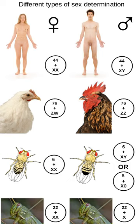The ZW sex determination system is found in birds, some reptiles, and some insects and other organisms. The ZW sex determination system is reversed compared to the XY system: in the chicken, females have two different kinds of chromosomes, and males have two of the same kind. In the chicken, this was found to be dependent on the expression of DMRT1. In birds, the genes FET1 and ASW are found on the W chromosome for females, similar to how the Y chromosome contains SRY.